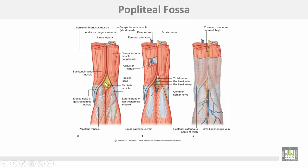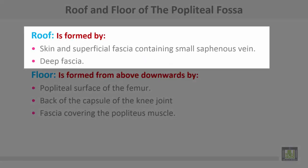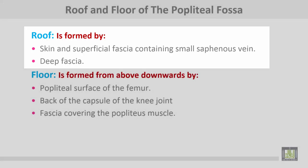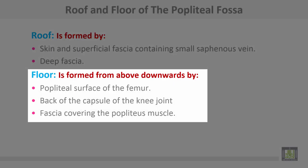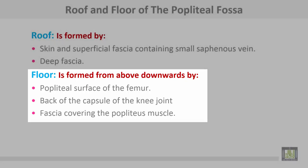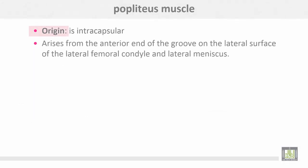The roof of the popliteal fossa is formed by skin and superficial fascia containing the small saphenous vein, and deep fascia. The floor consists of the popliteal surface of the femur, back of the capsule of the knee joint, and fascia covering the popliteus muscle. The popliteus muscle takes origin intracapsularly from the anterior end of the groove on the lateral surface of the lateral femoral condyle and the lateral meniscus.